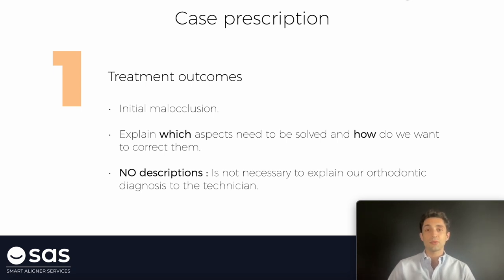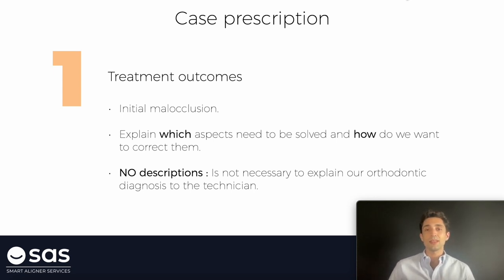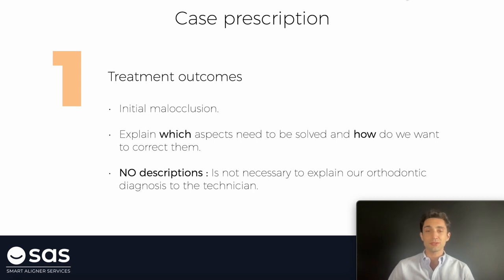If we have a case where we are going to place retromolar miniscrews to distalize the upper arch, the technician doesn't need to know if we are going to use those miniscrews or not — that information is just for us. The technician needs the information of how many millimeters we want to distalize, if we want to do the distalization with sequential movements or everything at the same time, if molars are going to be distalized simultaneously with the retromolar miniscrews, if premolars are going to follow a 50% pattern distalization, if we want to apply PIR protocol on anterior teeth. But whether we are going to use elastics or miniscrews to solve the sagittal problem is not important for the technician.